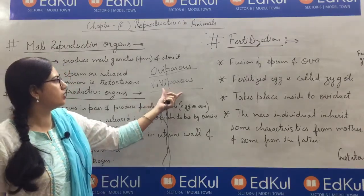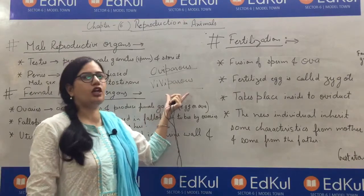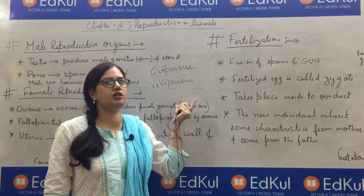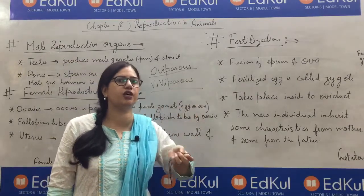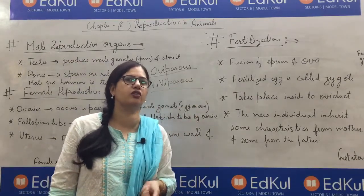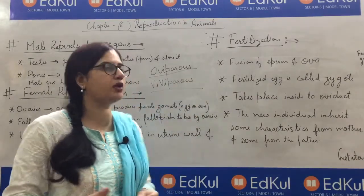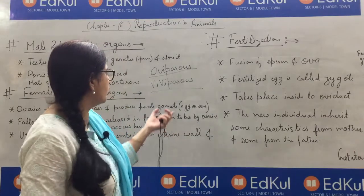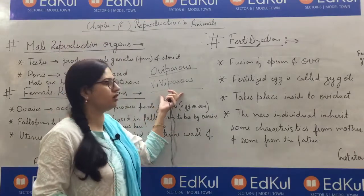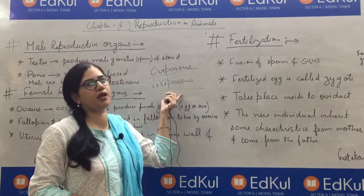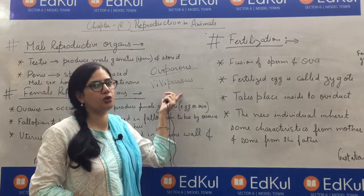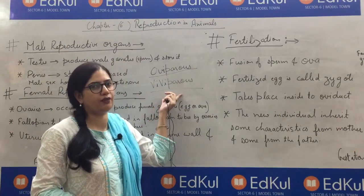Viviparous organisms are those individuals that give birth to young ones. Those who give birth to a baby are called viviparous. Examples are human beings and elephants.